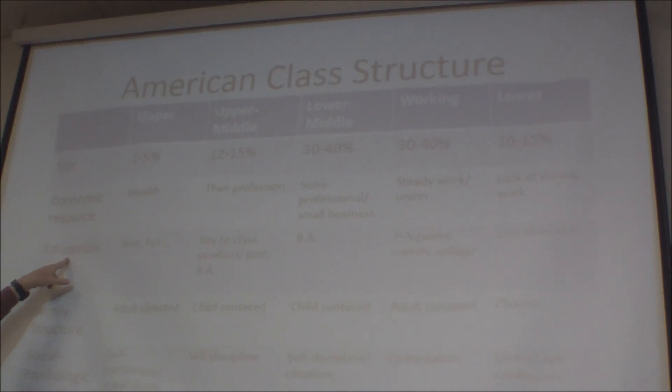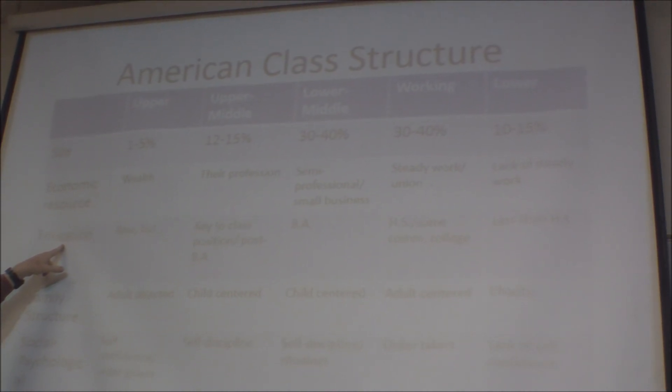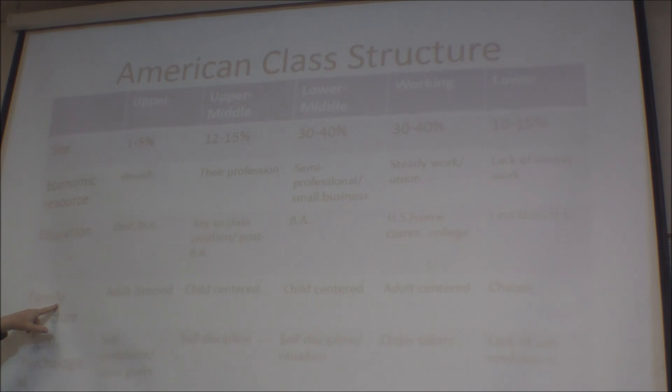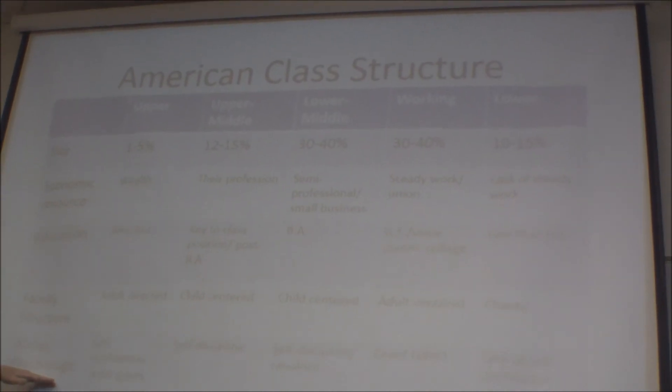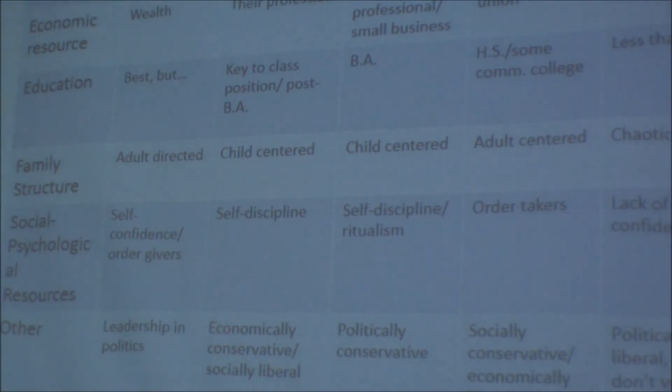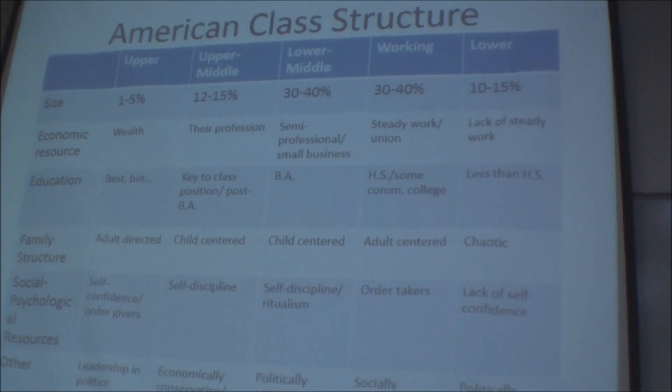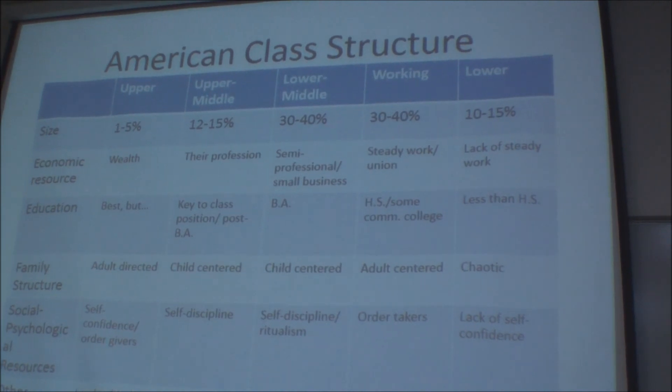The book and I agree there are five classes to focus on, but it's an arbitrary dividing line — don't get hung up on the number. Pay more attention to the impact of economic resources as the independent variable, affecting access to education, family structures, social psychological attitudes, and much more. Let's start at the top: the upper class is the smallest class.